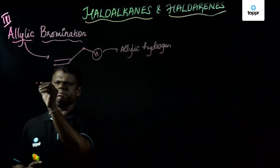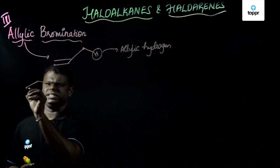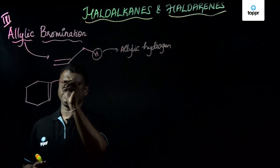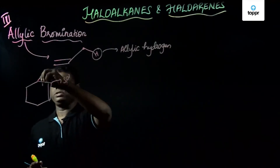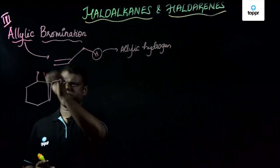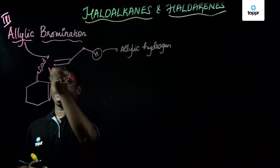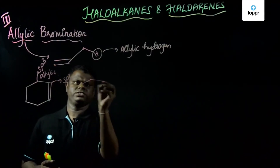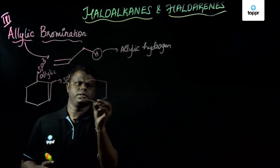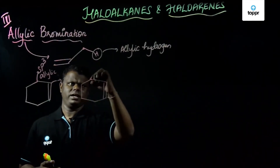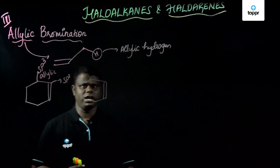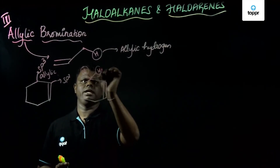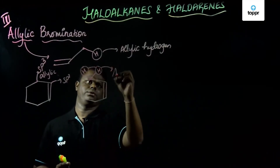Let's take a very simple example of cyclohexene. This is cyclohexene — it has a double bond, meaning these are sp2 carbons, and adjacent to that is a saturated sp3 carbon. This sp3 carbon is the allylic carbon. The carbon atom attached to the vinylic carbon has two hydrogens, and these are basically allylic hydrogens.